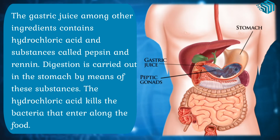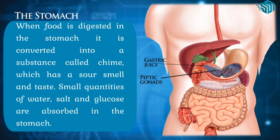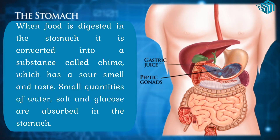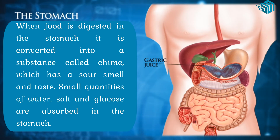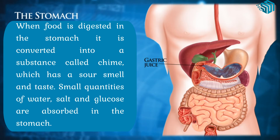Digestion is carried out in the stomach by means of these substances. The hydrochloric acid kills the bacteria that enters along with the food. When the food is digested in the stomach, it is converted into a substance called chyme, which has a sour smell and taste. Small quantities of water, salt and glucose are absorbed in the stomach.